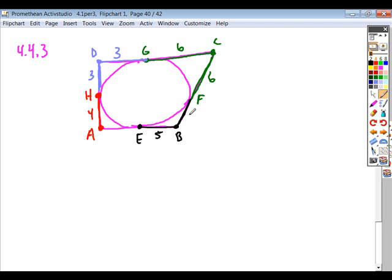B to F has to be 5, and then finally A to E would have to be 4. So any segments that originate from those same points are going to be equal if they're tangent. And then again, just add these up.